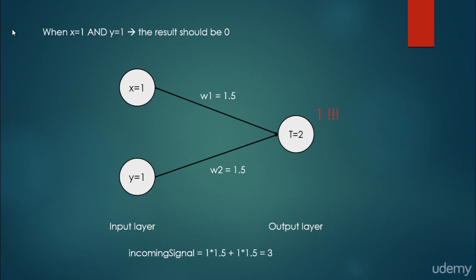What about the case when both x and y are 1? The result should be 1. The incoming signal is 1 times 1.5 plus 1 times 1.5. The x value is 1 and w1 is 1.5, so 1 times 1.5; the y value is 1 and w2 is 1.5, so 1 times 1.5. We sum them up and get 3. The output neuron will fire because the incoming signal of 3 is greater than the threshold of 2, yielding 1. So our neural network produces the correct result.